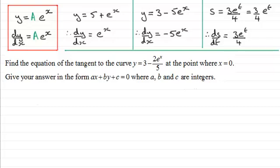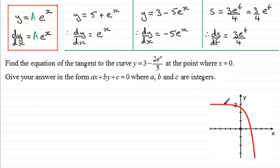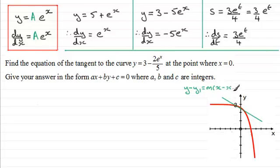Welcome back. To briefly summarize what this problem is about: if we're trying to find the equation of the tangent at the point where x equals 0 — which is the point on the y-axis — that tangent is going to be a straight line of the form y minus y1 equals m bracket x minus x1, where x1, y1 are the coordinates of the point and m is the gradient. The gradient can be found by differentiating the curve, so that's where I'm going to start.